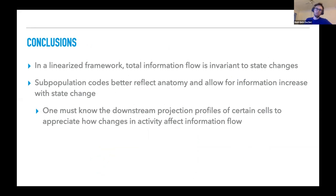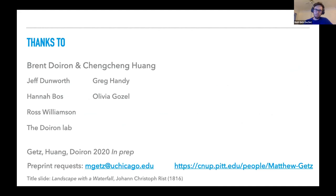So to conclude, what we've seen is that in a linearized framework, the total information flow is invariant to state changes, and subpopulation codes better reflect anatomy and allow for information increases with state change. The caveat is that one must know the downstream projection profiles of certain cells to appreciate how changes in activity affect information flow. And so with that, I just want to thank my co-authors on this project, as well as everybody who's helped out. We do have a working draft of this. It's going through final edits. And so if you want to find out when we post it, or get a copy, just shoot me a quick email. Thank you for your attention.